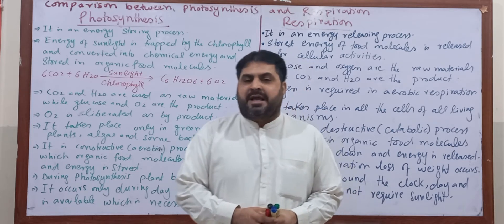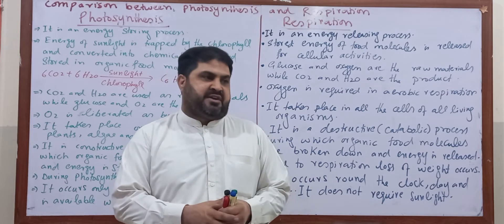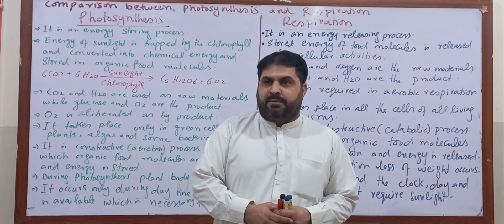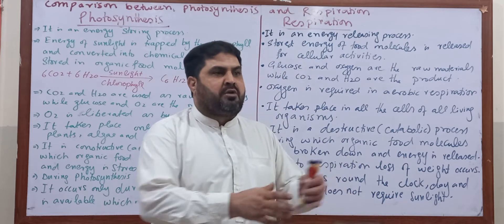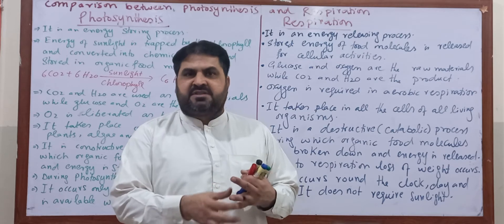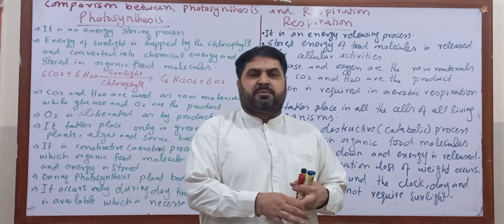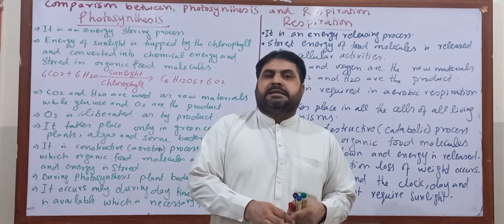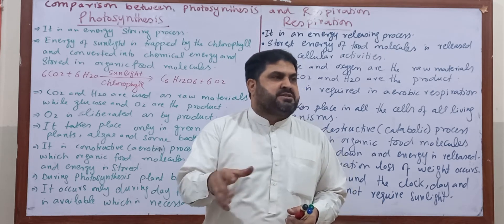Photosynthesis is a process of autotrophs. Autotrophs are those living organisms which have the ability to prepare their own food, meaning they contain chlorophyll — for example, plants, cyanobacteria, autotrophic bacteria, and algae.